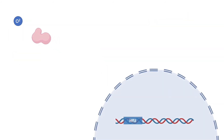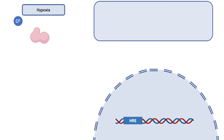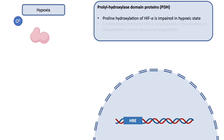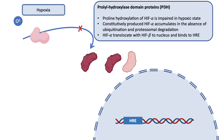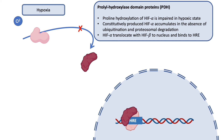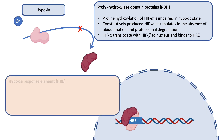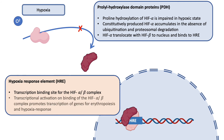However, in hypoxic conditions, prolyl hydroxylation of HIF-alpha is impaired. The constitutively produced HIF-alpha therefore accumulates in the absence of ubiquitination and proteosomal degradation. The accumulated HIF-alpha translocates into the nucleus together with HIF-beta, which is consistently present in the cells. The HIF-alpha-beta complex then binds to the hypoxia response elements in the promoter region of genes that mediate hypoxia response, including the erythropoietin gene, erythropoietin receptor, vascular endothelial growth factors, and mediators of iron metabolism and transport.